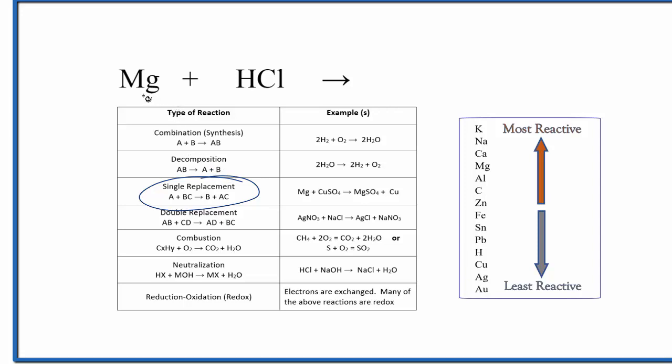So if the magnesium came in and replaced the hydrogen, that would leave the hydrogen all by itself. So here's our hydrogen. And we never have just hydrogen. It's going to be H2. And then the magnesium would now be with the chlorine. So we'd have MgCl plus this hydrogen gas here.